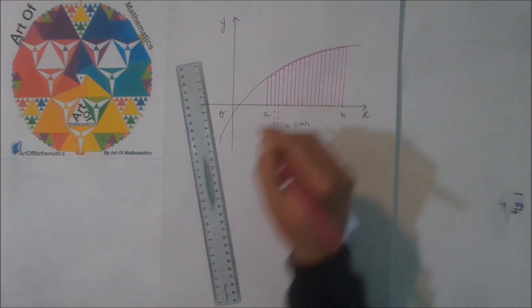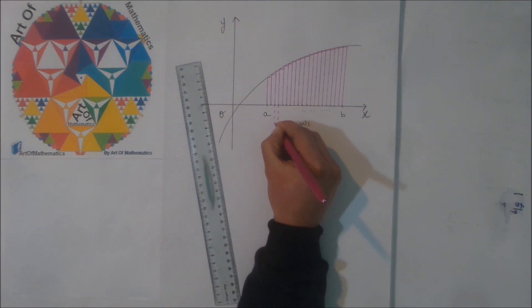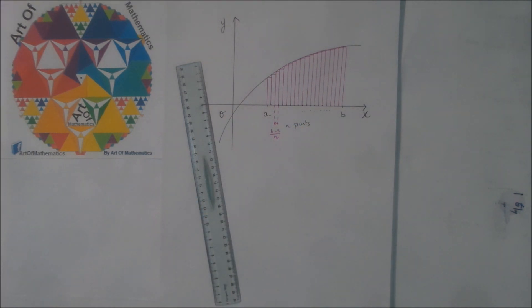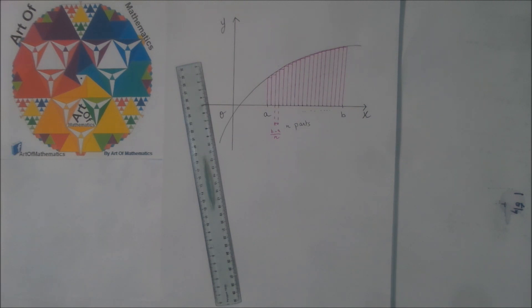The length of one part is B minus A divided by N. Now, if we focus on the graph, we can see that we've got N rectangles. We assume that the sequence AN represents the sum of the N rectangles' area.